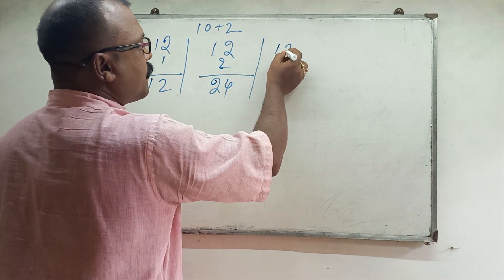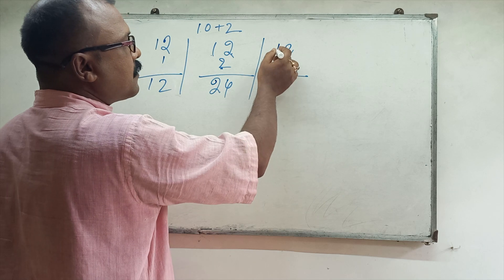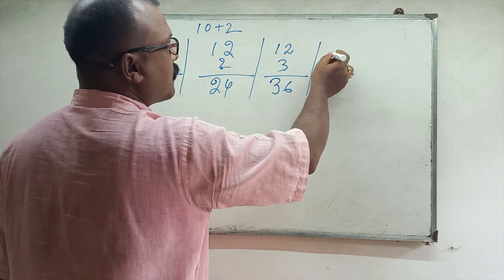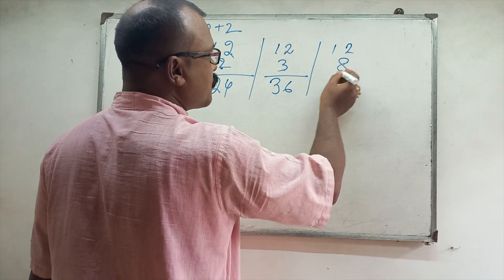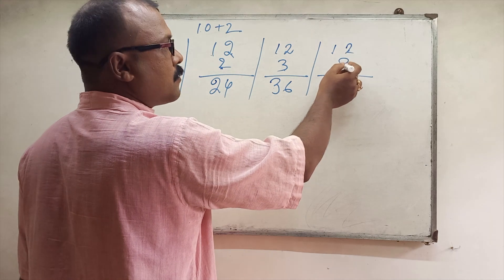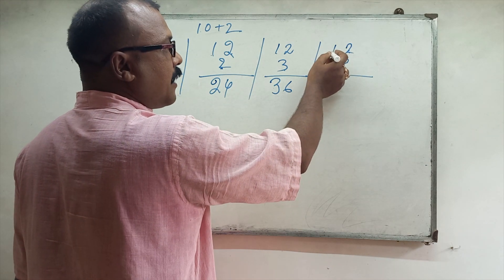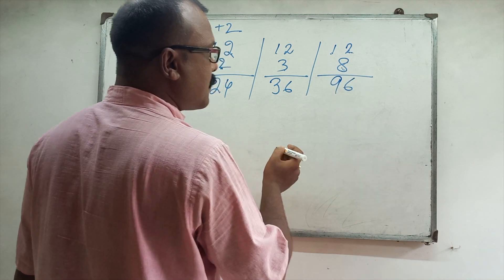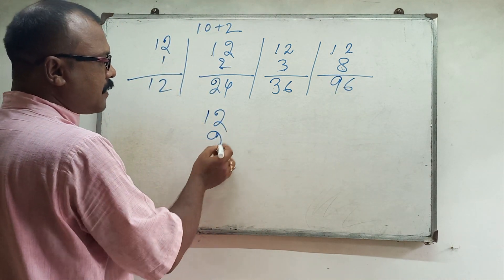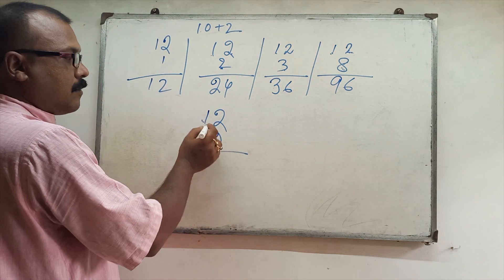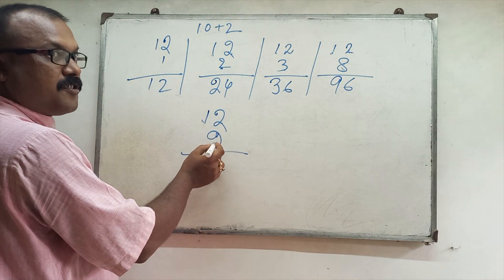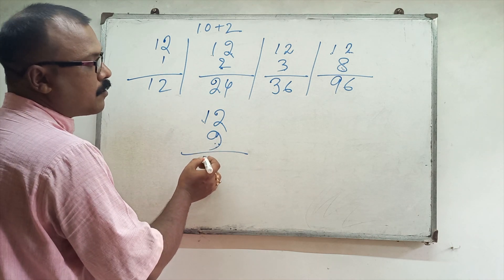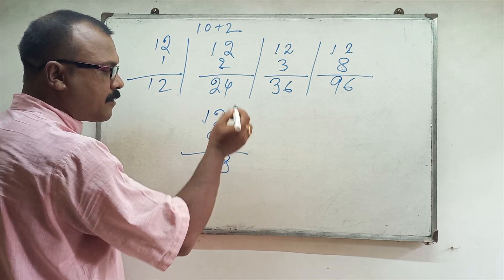12 threes are: 10 threes are 30, 3 sixes are... 36. 12 eights: 10 eights are 80, 2 eights are 16, so 80 plus 16 is 96. 12 nines: 10 nines are 90, 2 nines are 18, so 90 plus 10 is 100 plus 8 is 108.